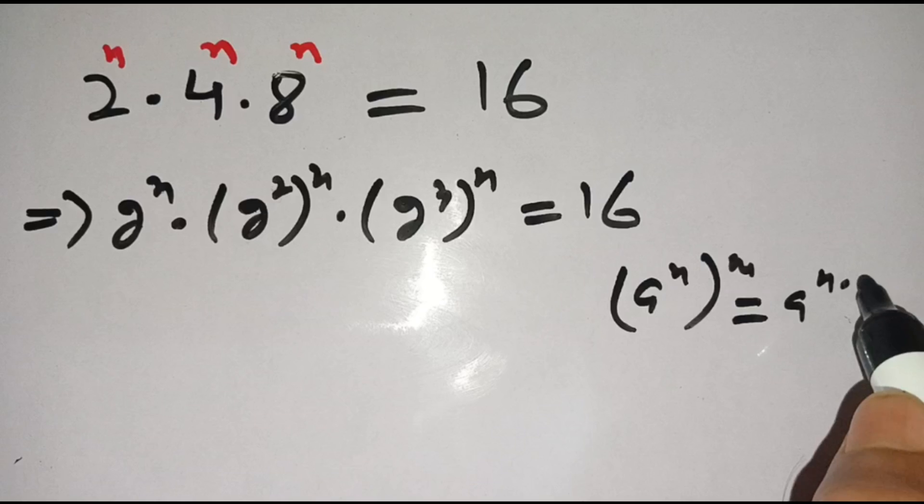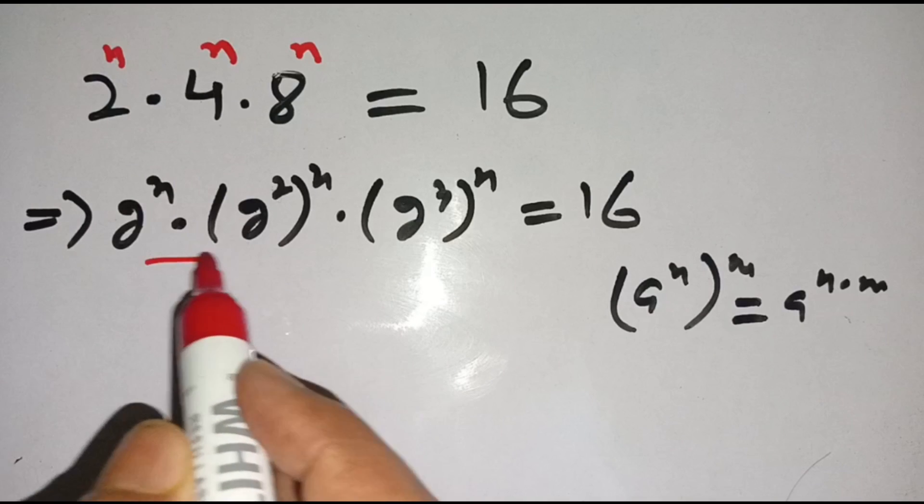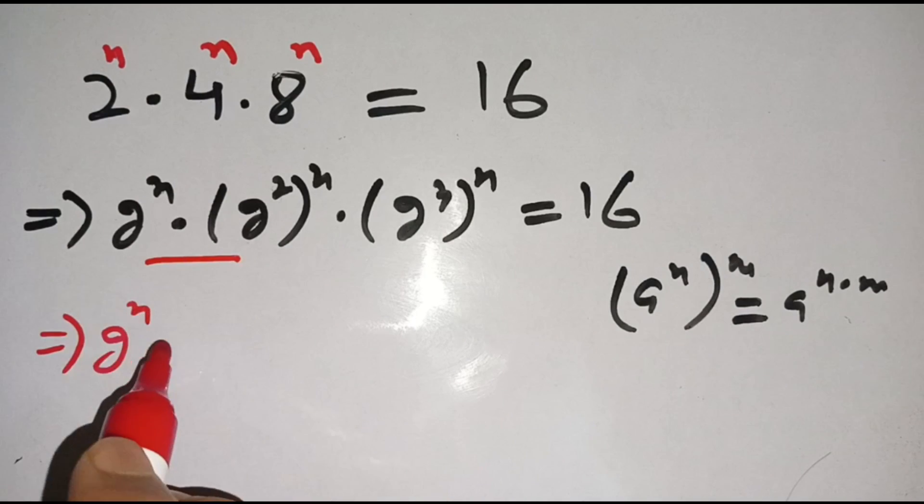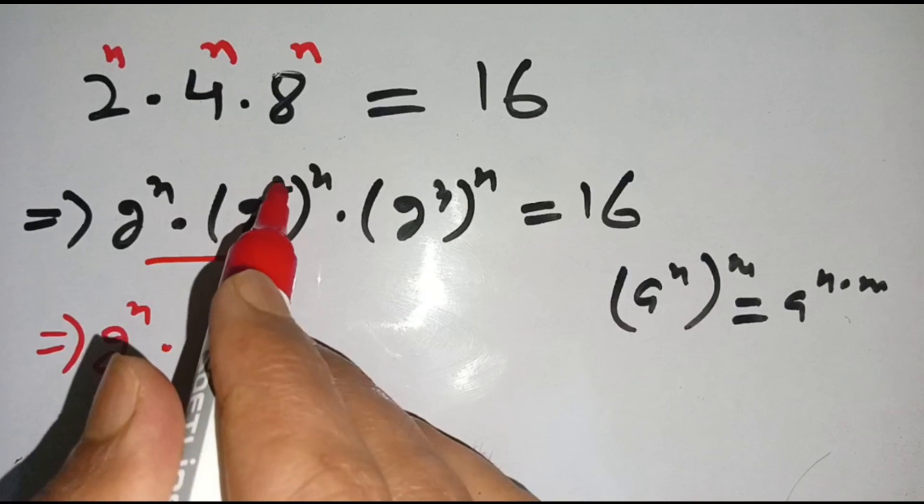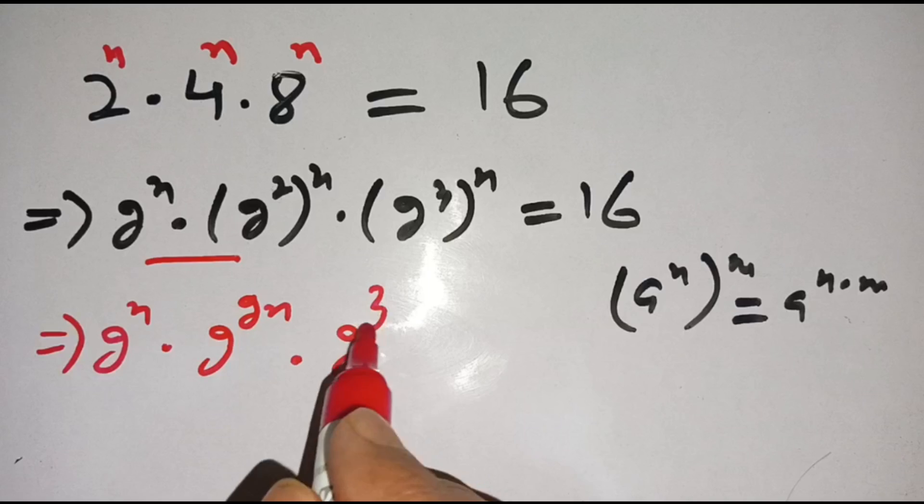Now apply this identity on the left hand side. We get 2^n times 2^(2n) times 2^(3n) is equal to 16, which can be written as 2^4.